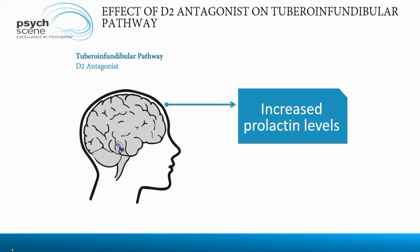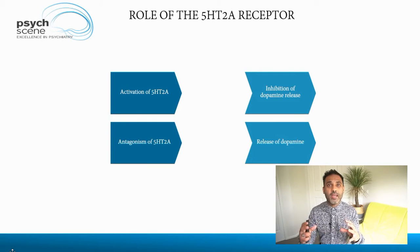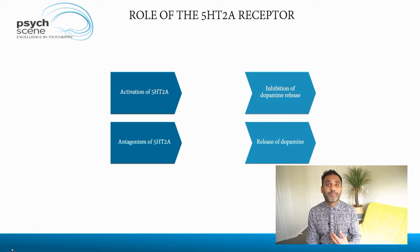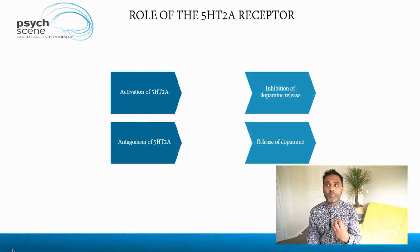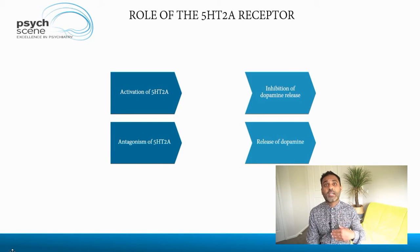The newer second-generation antipsychotic medications combine D2 receptor blockade with 5-HT2A antagonism, and this attempts to reverse the unwanted effects — they increase dopamine in those other pathways, thus minimizing side effects. As we saw with SSRIs, when the 5-HT2A receptor is activated it results in decreased frontal dopamine, which is why SSRIs can cause EPSEs, akathisia, and emotional blunting. By blocking the 5-HT2A receptor, we can increase dopamine and counteract those effects.